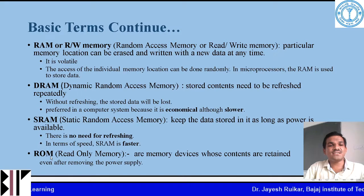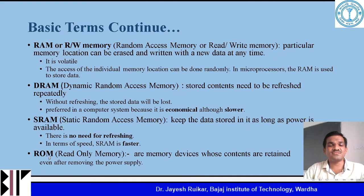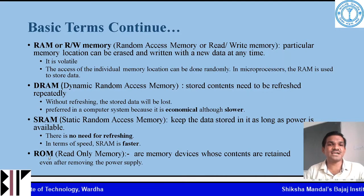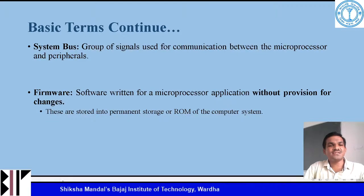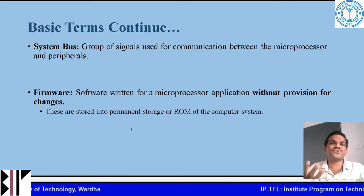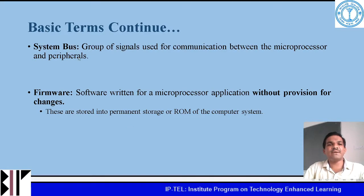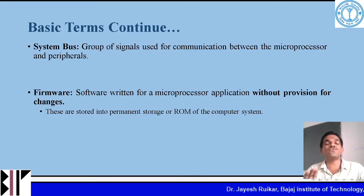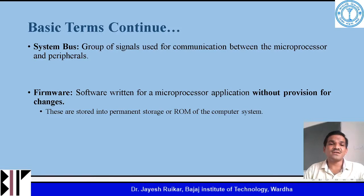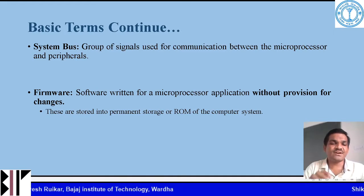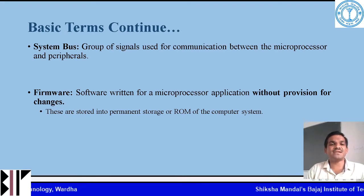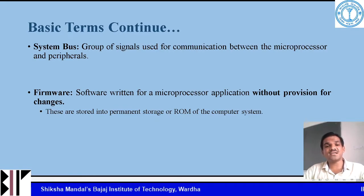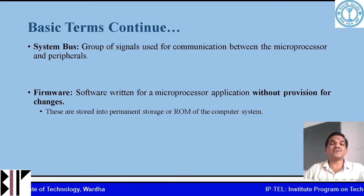ROM stands for read only memory. These are semiconductor memories whose contents are retained even after removing power — so ROM is a non-volatile memory. System bus is a group of signals used for communication between the processor and the peripherals. Firmware is software written on the microprocessor without any provision for changes — we cannot change the software after it is embedded in hardware. These programs or instructions are stored in the permanent storage or read only memory of the computer system.